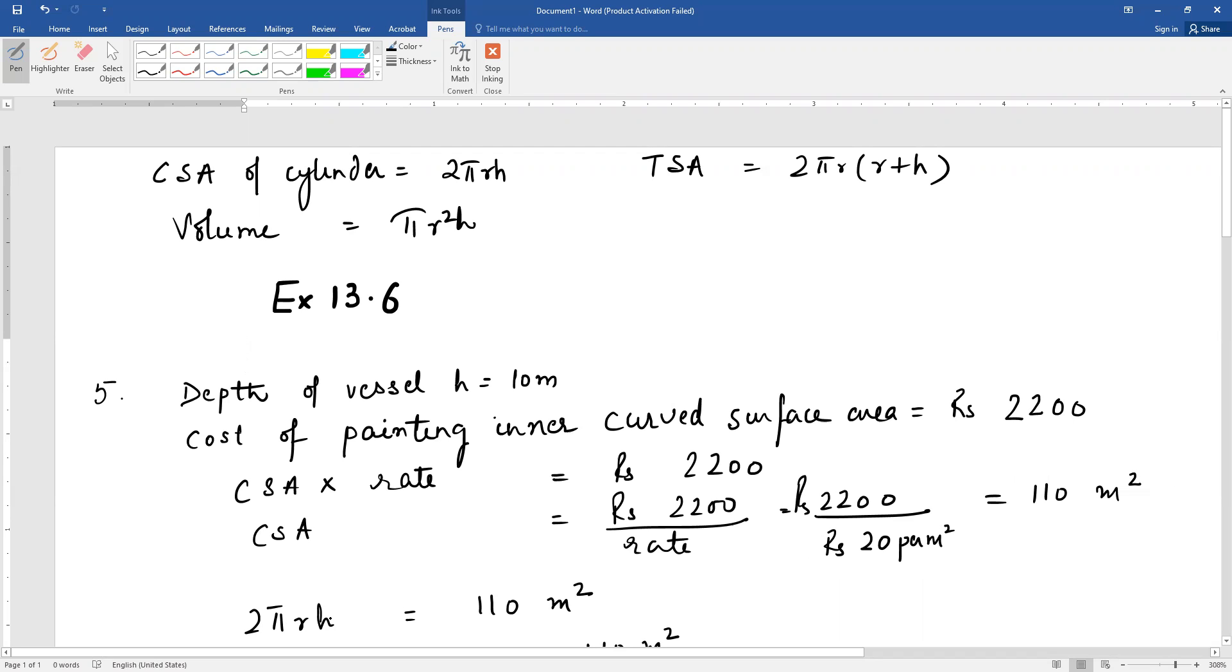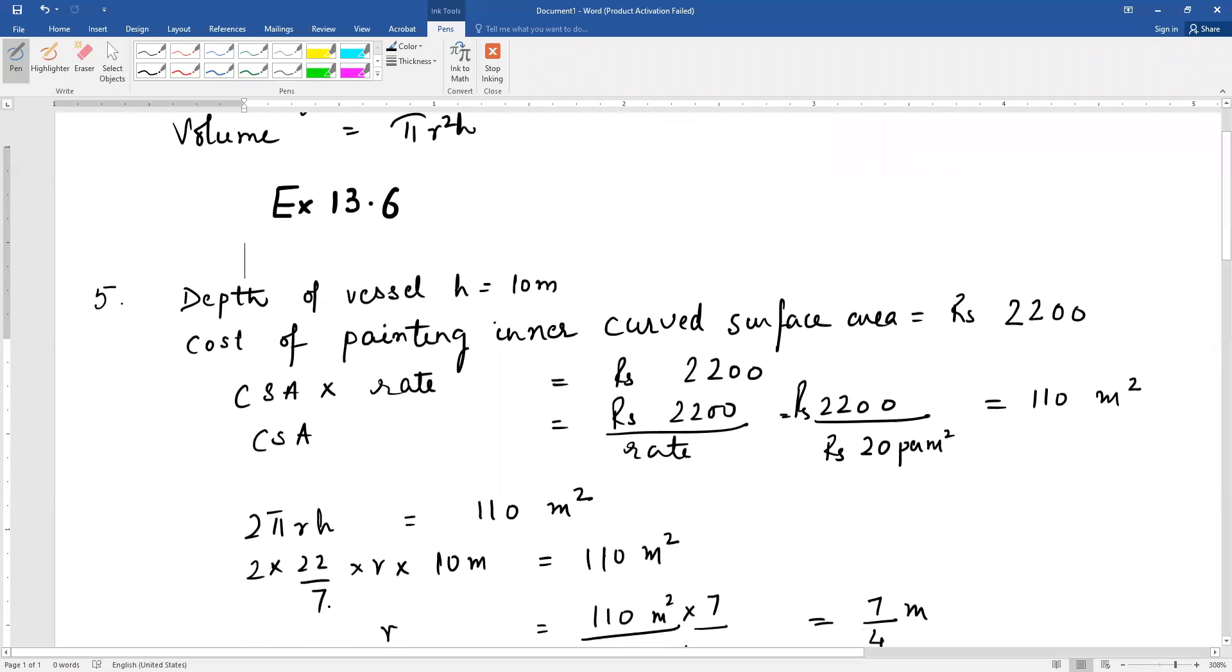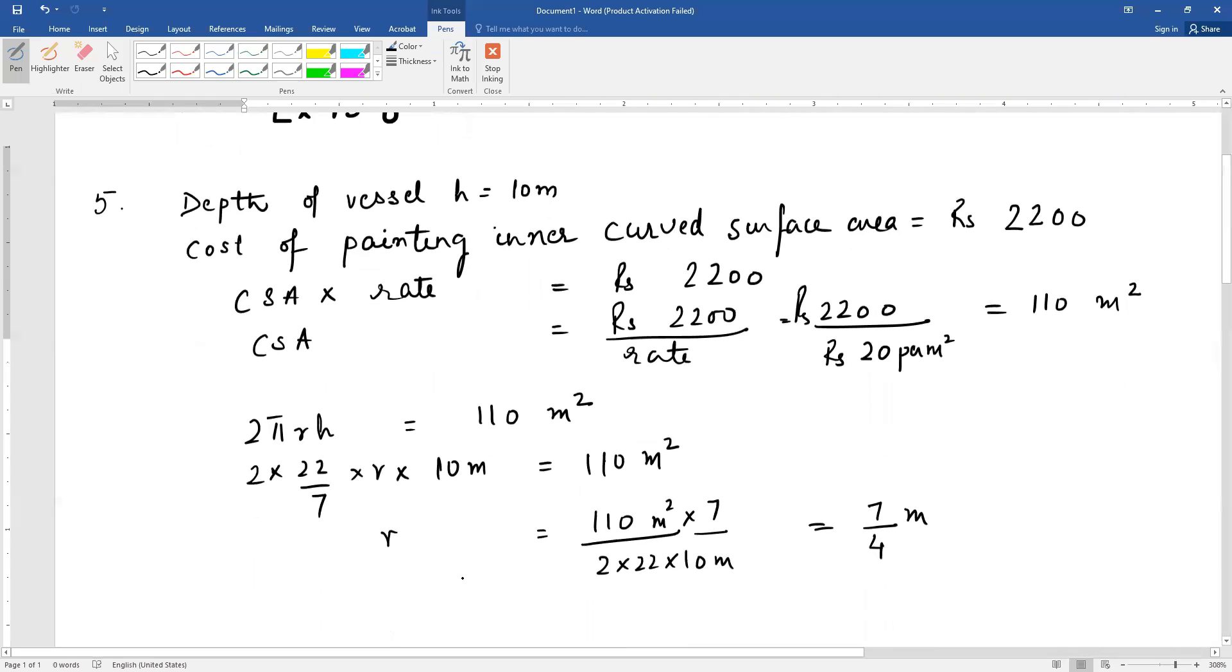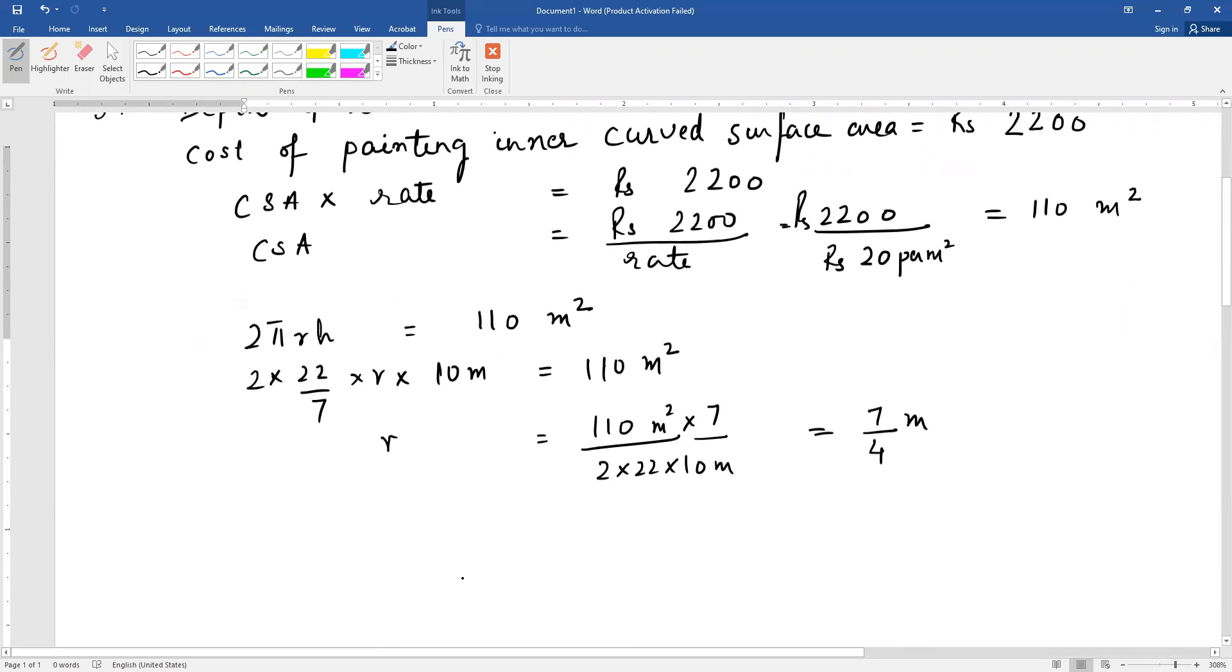Now, curved surface area formula is 2πrh equals 110. Substituting π equals 22/7, and h equals 10 meters, we can solve: 2 × 22/7 × r × 10 = 110. This way we calculate the radius as 7/4 meters.